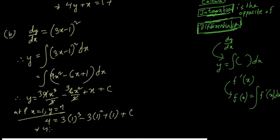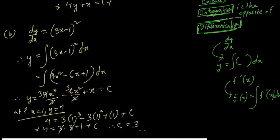Substituting x = 1 and y = 4: 4 = 1³ - 3(1²) + 1 + c, so 4 = 1 - 3 + 1 + c. The 3s cancel giving 0, so 4 - 1 = 3, meaning c = 3. Therefore the equation of the curve is y = 3x³ - 3x² + x + 3.